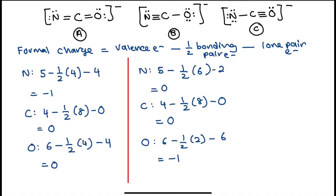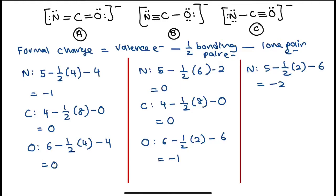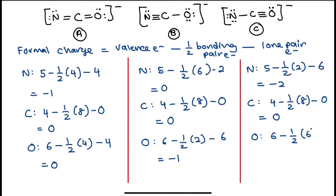For structure C, the formal charge on nitrogen would be 5 − ½(2) − 6 = −2. For carbon, it would be 4 − ½(8) − 0 = 0. For oxygen, it would be 6 − ½(4) − 2 electrons, giving a formal charge of +1. So the formal charges for structure C are: N = −2, C = 0, O = +1.